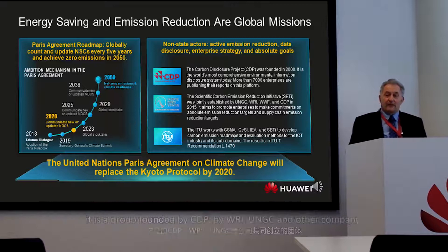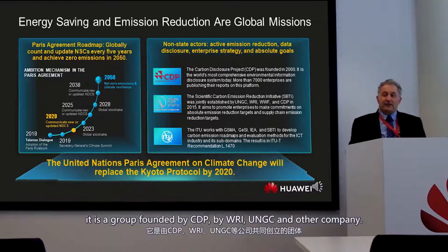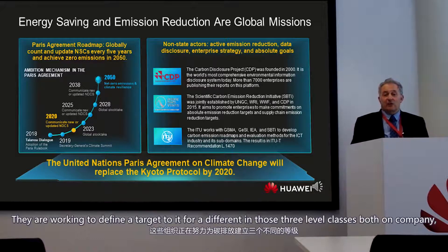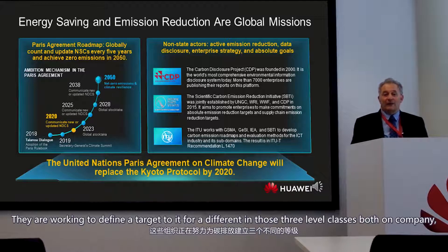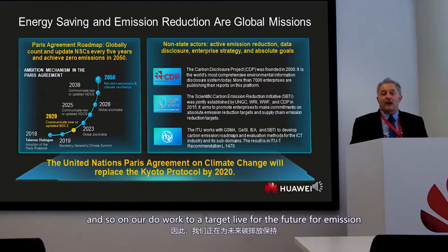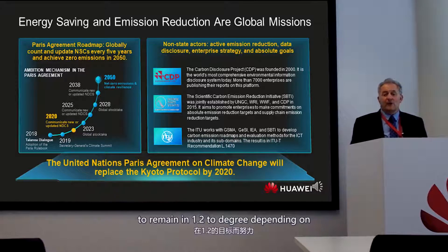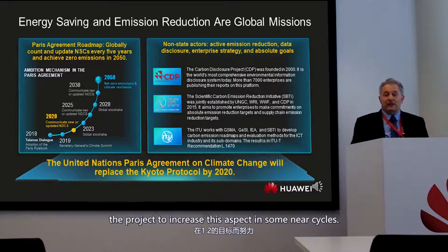The second body is the Science Based Targets initiative, SBTI, a group founded by CDP, WRI, UNGC, and other organizations. They are working to define a trajectory for different industries — like transport, oil companies, and so on — on how to work towards reducing CO2 emissions to remain within a 1.5 degree temperature increase compared to pre-industrial levels.